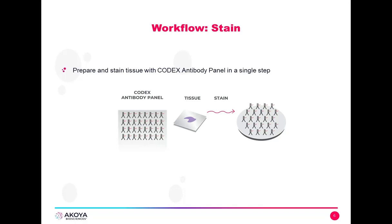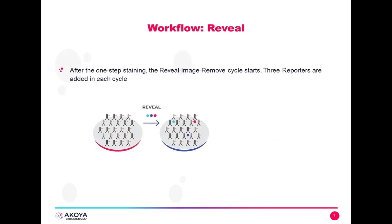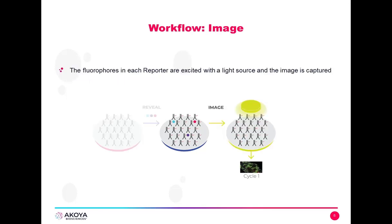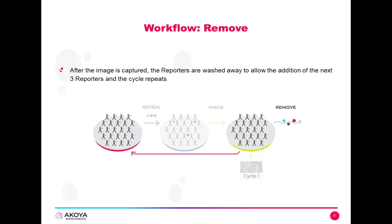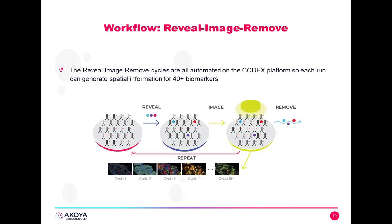The workflow for CODEX is to first stain the tissue with a cocktail of DNA-barcoded primary antibodies. These antibodies are fixed to the tissue so that they are not removed in following processes. We then reveal where these antibodies have bound to their target antigen using a one-step reveal process in each CODEX cycle — an isothermal process by which the CODEX reporters are hybridized to the DNA-barcoded antibodies. Automation for revealing where these antibodies are is provided by CODEX. We reveal, image, and then remove our CODEX reporters. This cycle can be repeated in a second, third, and subsequent cycles so that we can collect all our target markers in as many cycles as we need.